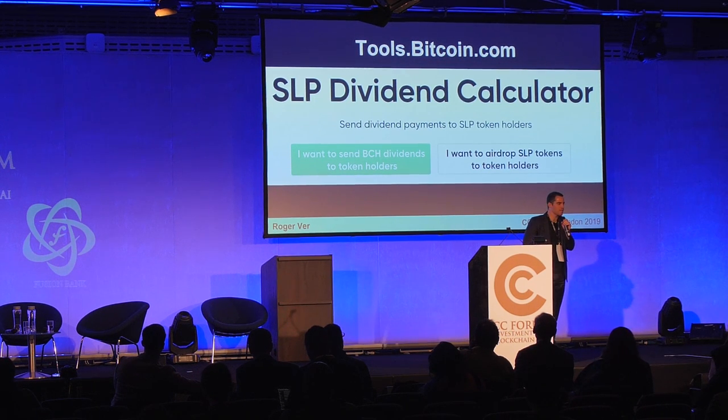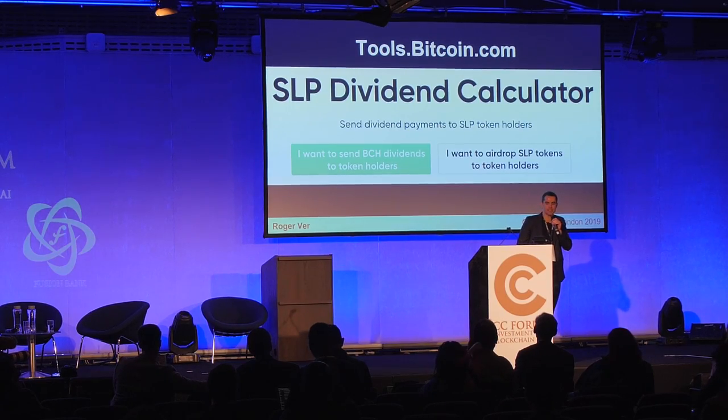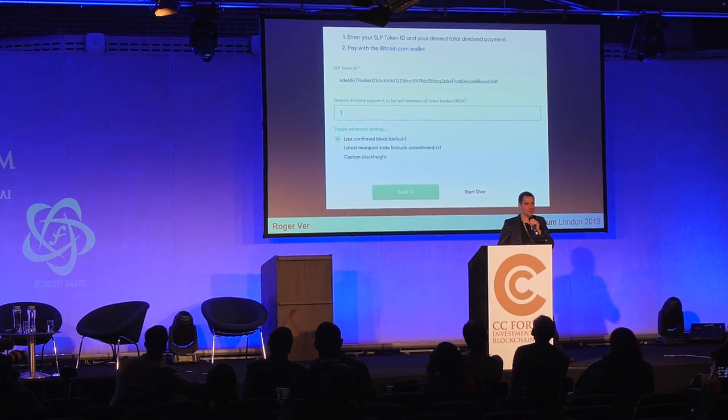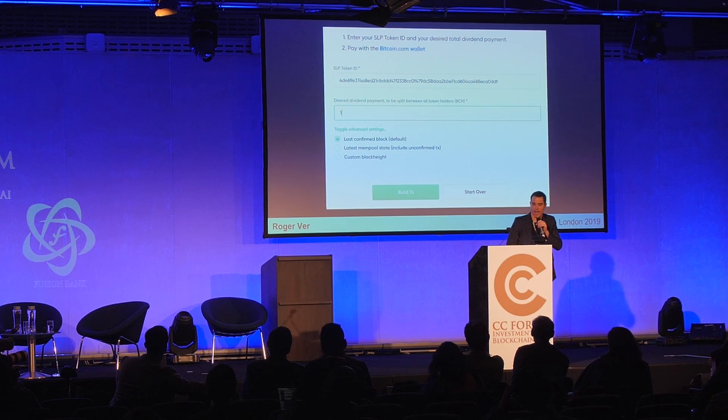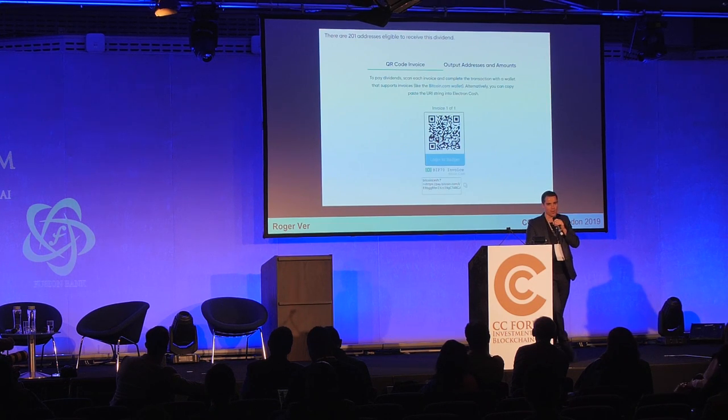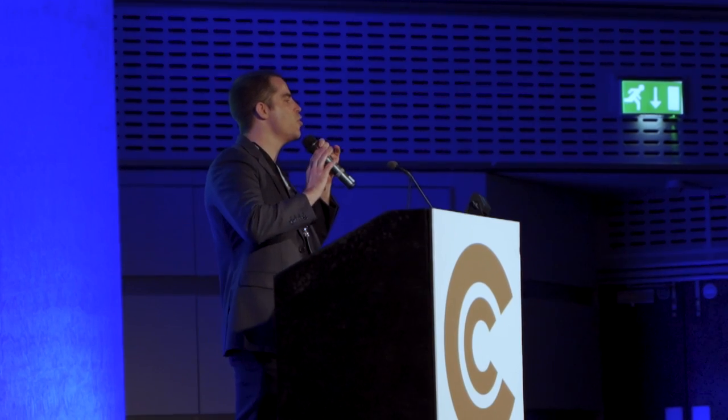Here's where it becomes really, really interesting — because all of these tokens just sit at a Bitcoin Cash address. We've built an SLP dividend calculator that allows you to send dividend payments to SLP token holders. You can send the dividends in the form of either Bitcoin Cash or other tokens. It's so simple: you paste the token ID and the amount of dividends you want to pay to all holders of that token, then hit the build transaction button. It shows a QR code, and you can pay it with any BIP70-supporting wallet — like the Bitcoin.com wallet, blockchain.com wallet, Coinbase wallet, or BitPay wallet. Instantly on the blockchain, you've paid dividends to every single person in the world, no matter what country they're in.